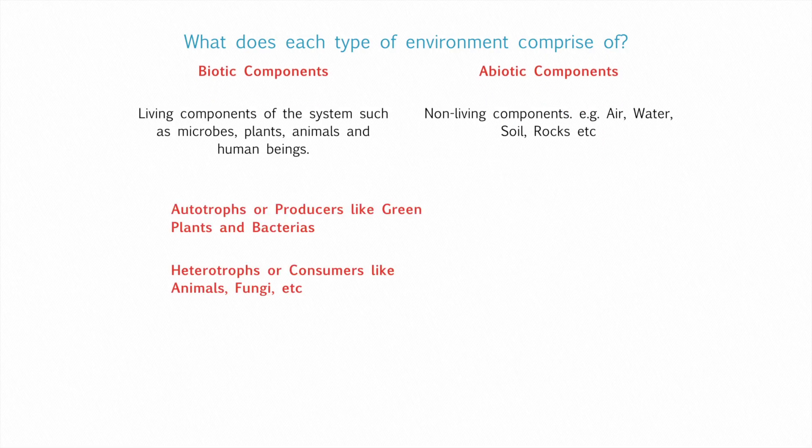Biotic components are again divided into two parts. Autotrophs, which are producers — they produce their own food, like green plants and bacteria. Heterotrophs, which are consumers — they depend on autotrophs, like animals, fungi etc.